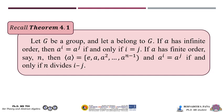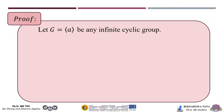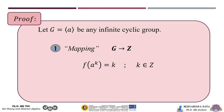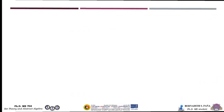If a has finite order, say n, then the generator of ⟨a⟩ equals the elements {e, a, …, a^(n−1)}, and a^i = a^j if and only if n divides i − j. To prove this, let ⟨a⟩ be any infinite cyclic group. For the first step, the mapping: we define f: ⟨a⟩ → ℤ by f(a^k) = k, where k ∈ ℤ. Our function f is well defined since ⟨a⟩ is an infinite cyclic group with infinite order, so a^i is an element of ⟨a⟩.